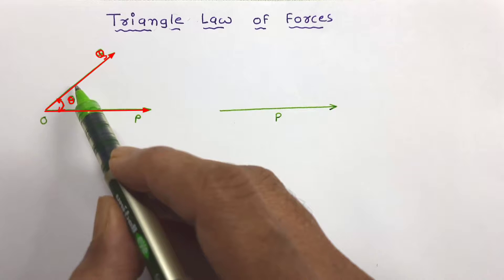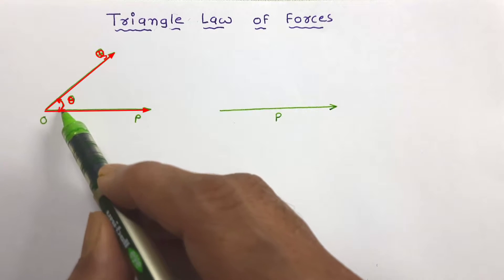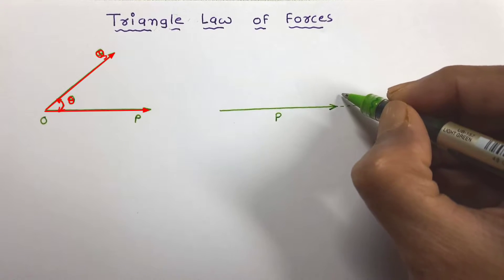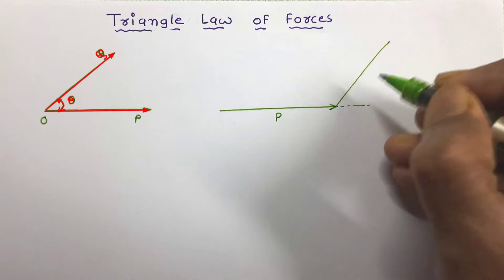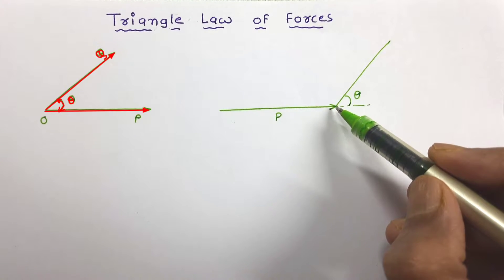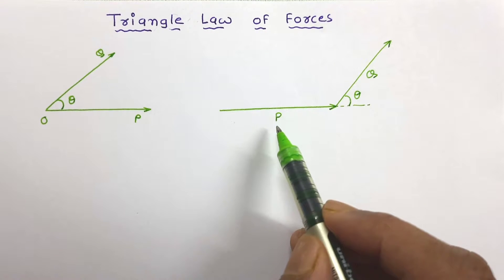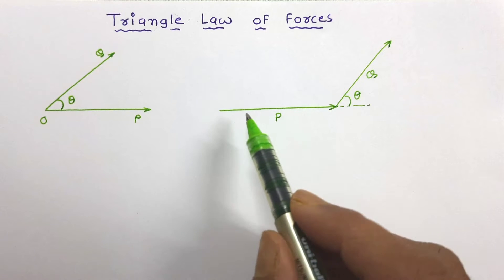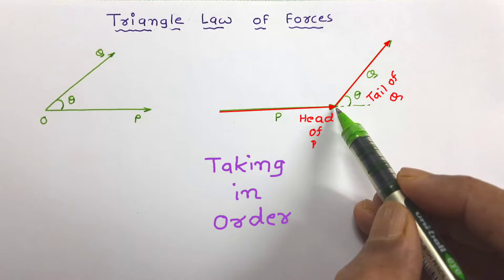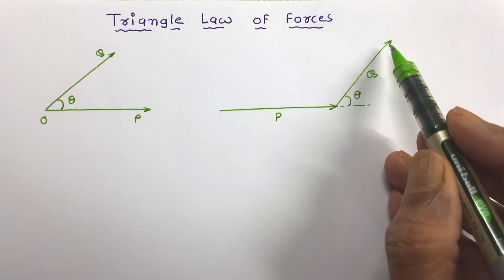Now we have to represent force Q by magnitude and direction, so we consider the direction. The angle between the two tails is theta. We can take Q like this, meaning this angle theta will be here. This is the tail of force Q and this is the head of force Q. This Q force is drawn again according to the same scale. When we draw the next force starting at the head of the previous force — meaning at the head of force P the tail of force Q is lying — it is called taking in order.